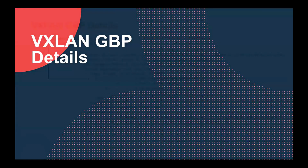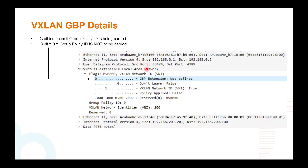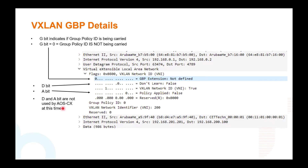This is a Wireshark capture of what it looks like. If you drill into the VXLAN header, you see there's a GBP extension that indicates the GBIT. If GBIT is 0, that means the Group Policy ID is not being carried and is not defined — the Group Policy ID is 0. There is also the D bit (don't learn) and the A bit (policy applied). Note that CX does not use these two bits at this time; only the GBIT is used.